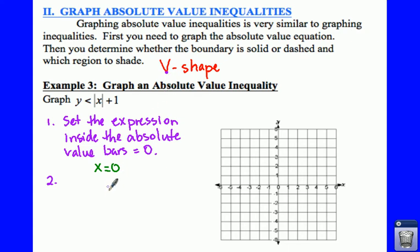So by doing this first step, by taking whatever is inside your absolute values and setting it equal to zero, that is going to help you figure out your table because then next you want to make a table of values.